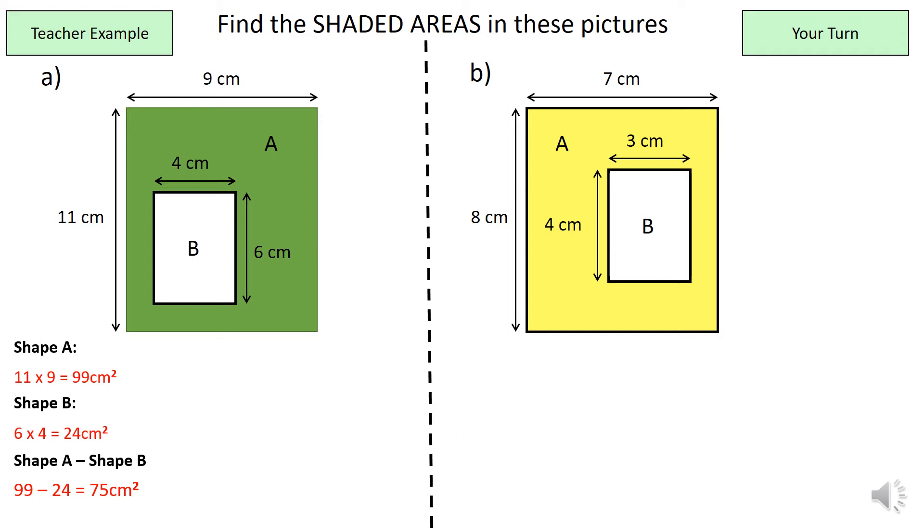Now I want you guys to, using the exact same method and layout, can you try the yellow box or the yellow shape in your books now? So pause the video now and have a go. Okay, what we should have done is 56 subtract 12 which equals 44 centimetres squared.